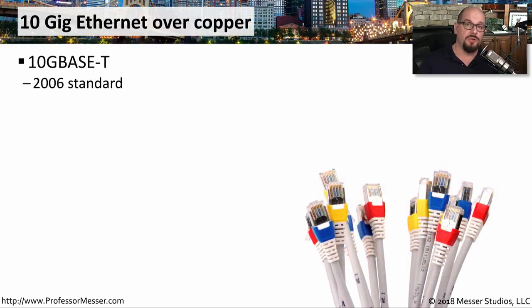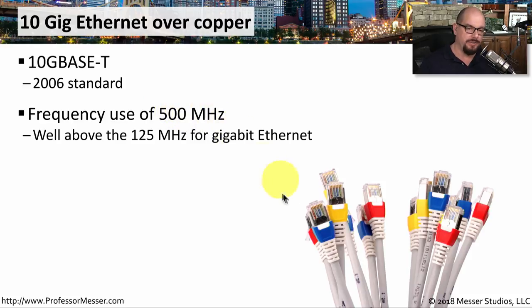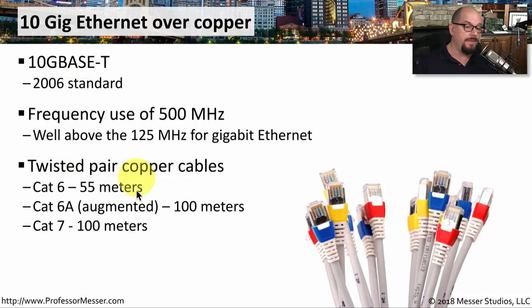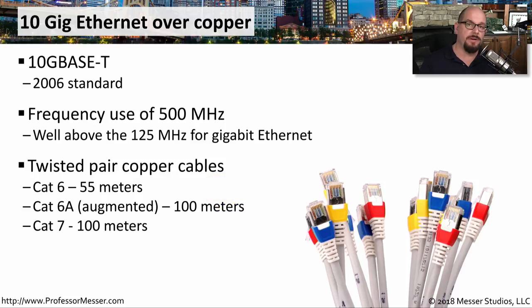If you're looking to push the throughput of copper cabling, you can run 10 gigabit Ethernet over copper using the 10GBaseT standard. This uses frequencies up to 500 megahertz inside the cable, which is well above the 125 megahertz used for gigabit Ethernet connections. Because of that, you'll need cable specifically designed to support these higher frequencies. For 10GBaseT, you'll get 55 meters in length using CAT6 cable. You can upgrade to Category 6A, which stands for augmented, if you need to go to 100 meters. And if you need additional shielding from interference, you can choose Category 7 cable, which shields not only the entire cable itself but each individual pair of wires.